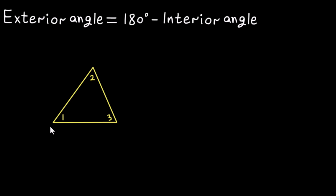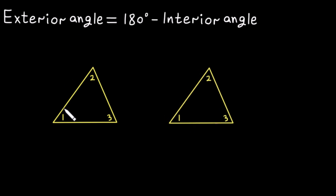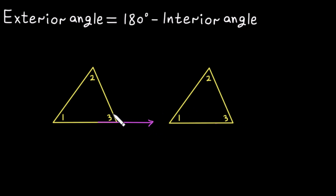Let's copy this triangle and place it here to compare between these two exterior angles. I will copy this triangle and put it next to it. As you can see, I have copied the triangle. Now I want to focus on this vertex — to have an exterior angle we have to extend either this side or this side. I will extend it like this.